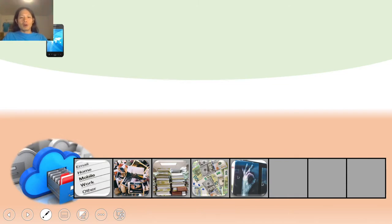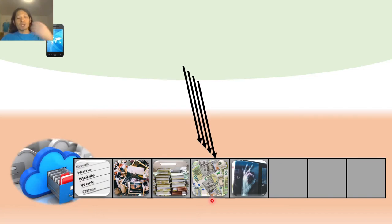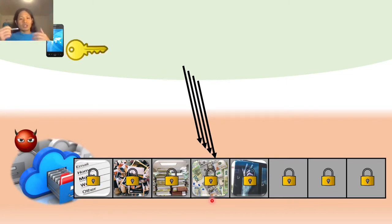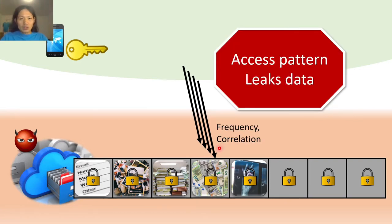The problem of Oblivious RAM or ORAM considers the scenario of outsourcing storage. We have a client that has only very small storage, so we outsource a huge data array to a cloud server. The data is accessed piece by piece. In case the server is compromised or corrupted by an adversary, we encrypt all the data on the server. However, encryption is not enough because the adversary can still see the location of the accessed data. If these locations depend on the data contents, then just looking at these locations, the adversary can infer very sensitive information about our data.